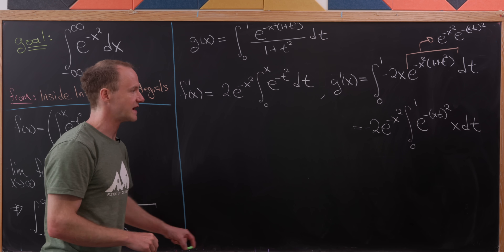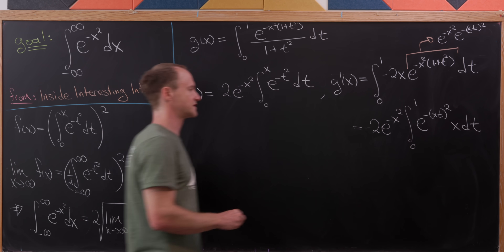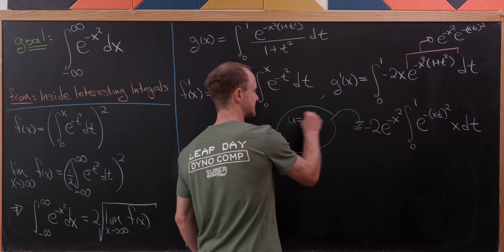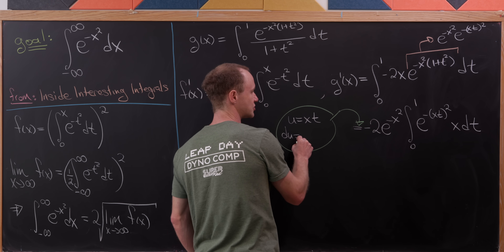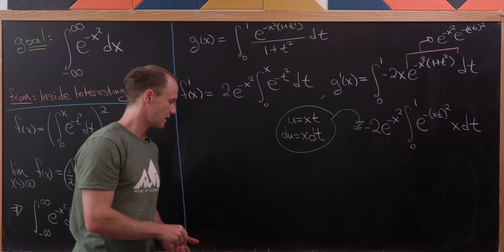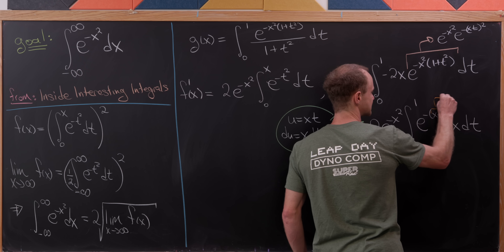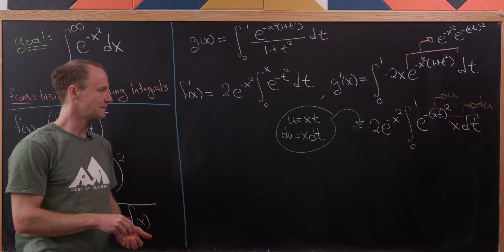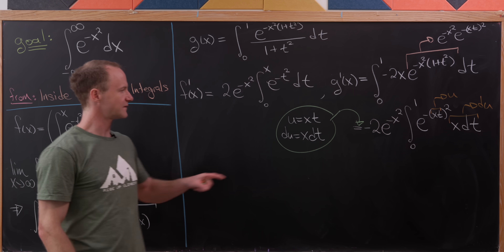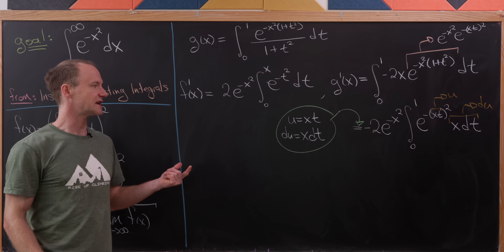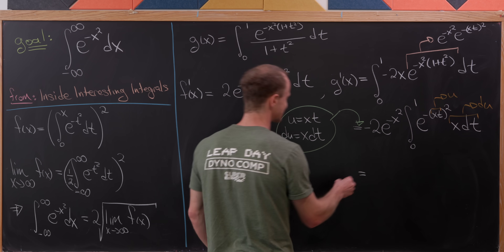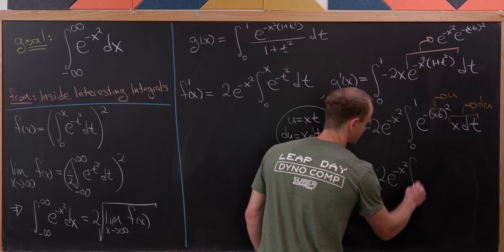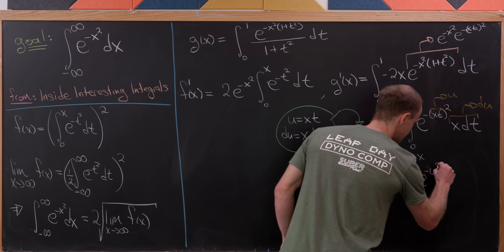That motivates a substitution: let u equal x times t, so du equals x dt. We can identify the u term as x times t and the du term as x dt. When t is 0, u is also 0; when t is 1, u equals x. This gives us minus 2 times e to the minus x squared times the integral from 0 to x of e to the minus u squared du.